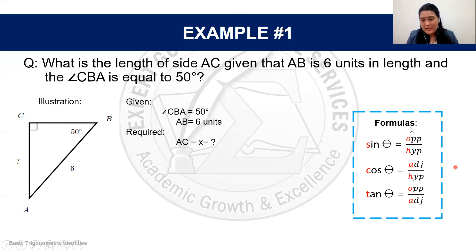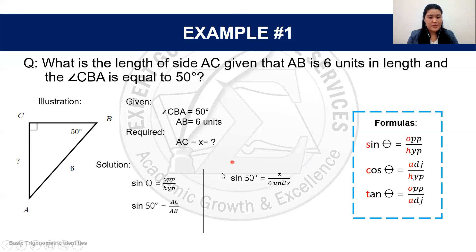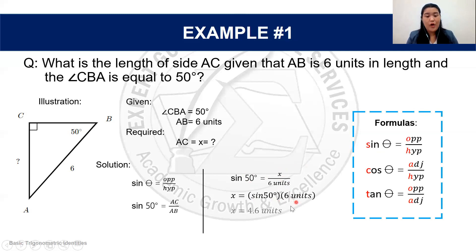To solve this, remember SOHCAHTOA. We're given the hypotenuse and looking for the opposite side of the 50-degree angle, which coincides with sine. Directly substituting: sine(50°) = X / 6. Using cross multiplication, X equals sine(50°) multiplied by 6 units, which equals approximately 4.6 units. So 4.6 units is the length of our side AC.